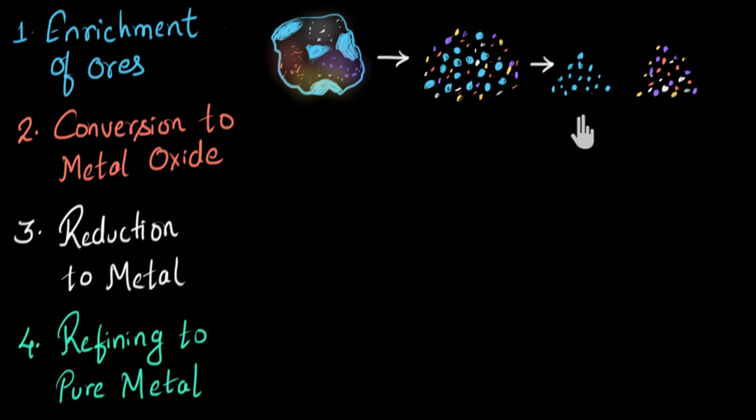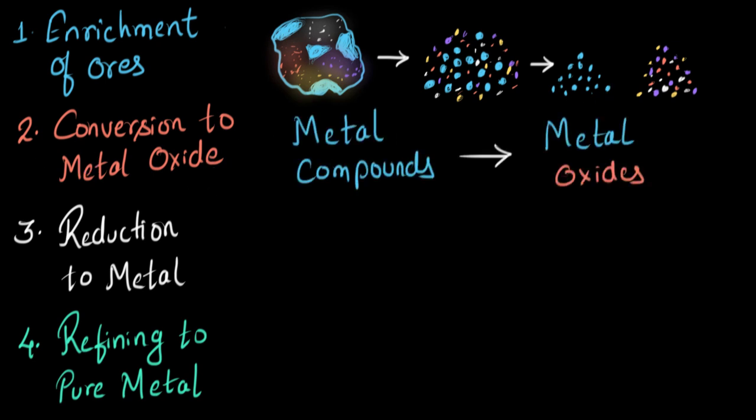Now next step will be to convert this to metal oxide. See, our final aim is to arrive at the pure metal from this ore, right? Now this metal compound could be in any form. It could be metal oxide, metal carbonate or metal sulfide or something else. Now it turns out it's easier to extract metal from metal oxide. And that's why if this compound is metal carbonate or metal sulfide or something else, then first of all, we convert this to metal oxide. And that's where comes the second step. Metal compounds, other metal compounds are converted to their metal oxide form.